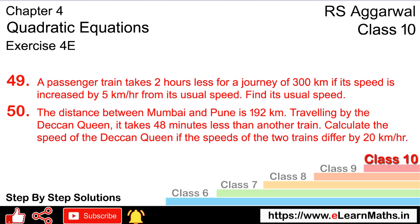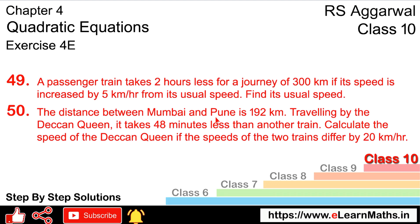Let's do question number 50. The distance between Mumbai and Pune is 192 km. Traveling by the Deccan Queen takes 48 minutes less than another train. Calculate the speed of the Deccan Queen if the speeds of the two trains differ by 20 km per hour.